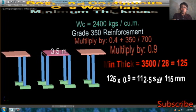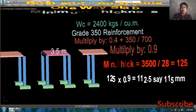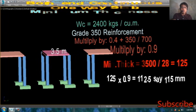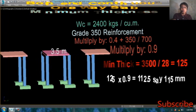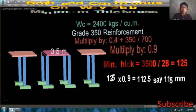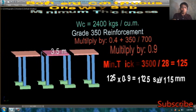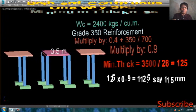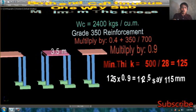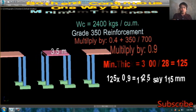Bakit po 0.9? Kasi po, 0.4 plus 350 divided by 700. Or 0.4 plus FY divided by 700. Yun po yun, yung mathematical computation po nun, ang answer po nun is 0.9.